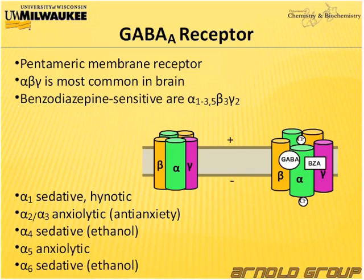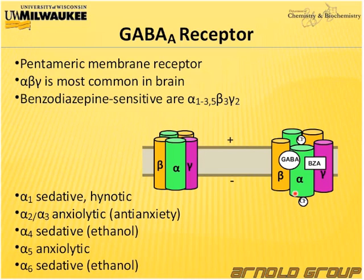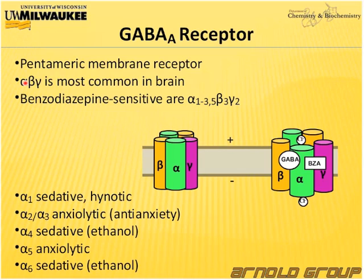The GABA-A receptor itself is a pentameric membrane receptor, as depicted in the figure here, where you have the closed receptor arranged in a circle. In the presence of GABA, the receptor opens and increases the chloride flux into the cell, increasing the negative potential. Although there are 19 gene products known for subtypes of the GABA-A receptor, the most common one is the alpha-beta-gamma combination in the brain. Benzodiazepines modulate the combination of alpha-1 to 3 and alpha-5, together with beta-3 and gamma-2.